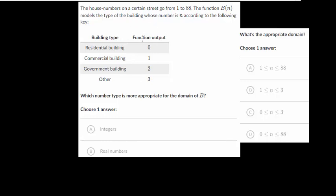And that will give us a different type of output, either zero, one, two, or three. So if we plug in, let's say house number 33, and it gave us two for our output, that would tell us house number 33 is a government building.